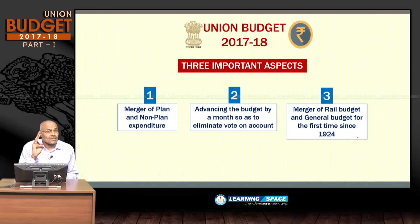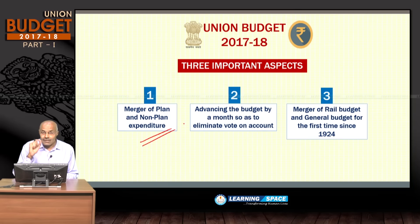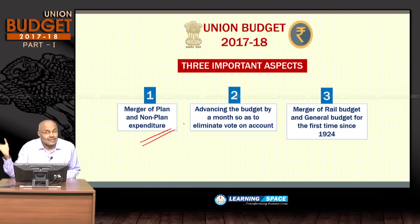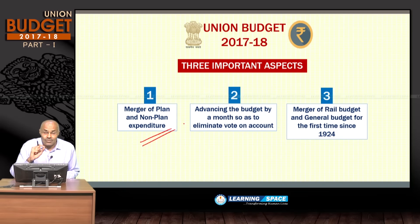Three specialties about this year's budget. First is the merger of plan and non-plan expenditure. The 12th Five-Year Plan will be the last, since the Planning Commission has been dissolved. The 12th Five-Year Plan will be completed by March 31, 2017, and subsequently there will not be any five-year plans. Niti Aayog is now looking at perspective plans.